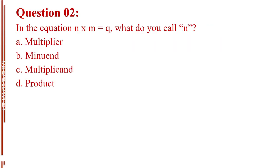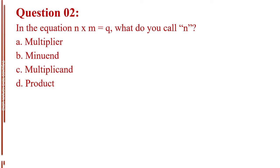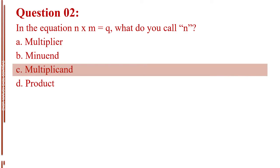Question number two. In the equation N times M equals Q, what do you call N? Letter A, multiplier. Letter B, minuend. Letter C, multiplicand. Letter D, product. The answer is Letter C, multiplicand.